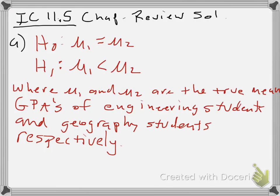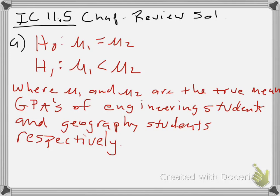We don't have every GPA, so we don't know for certain. Part B: what's a type 1 error and its consequence? I always look back at the hypotheses. A type 1 error is concluding the alternative is true when in reality the null was true. A type 2 error is the opposite — concluding the null is true when in reality the alternative was true.